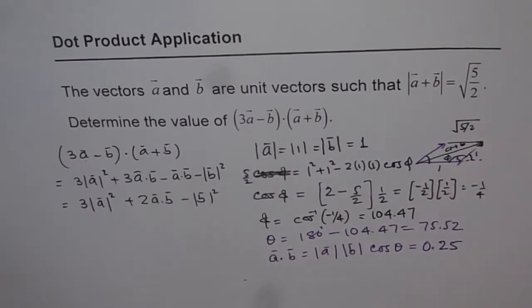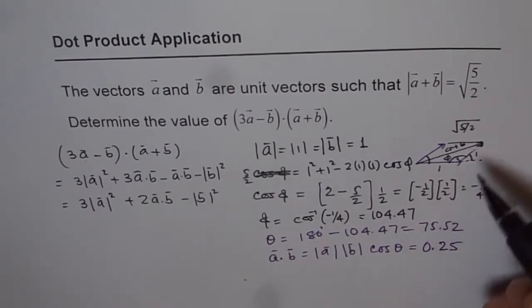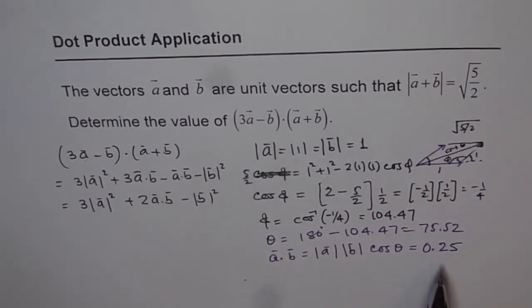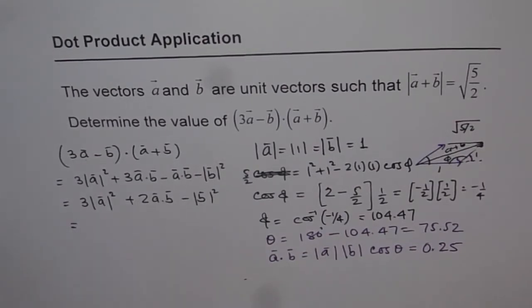So that is the value of A dot B. So you have to do all this calculation to get A dot B. Once you get A dot B, then you can substitute your values here and get the answer.